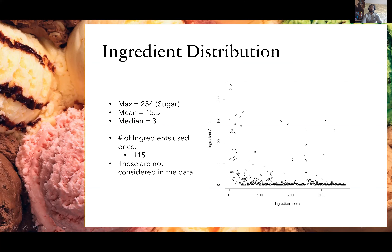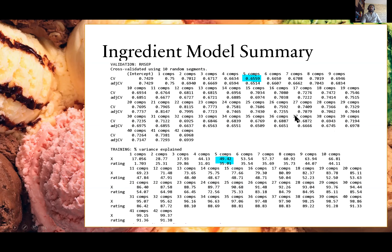A little bit about the ingredient distribution: the ingredient showing up most often was sugar — no surprise for ice cream. The mean number of ingredients was 15, the median was 3. There were a number of ingredients that only appeared once — I didn't include those in the dataset because if they were randomly absent from the training set I didn't know how that would impact results. Some of those single-use ingredients were things like M&Ms or Reese's Pieces.